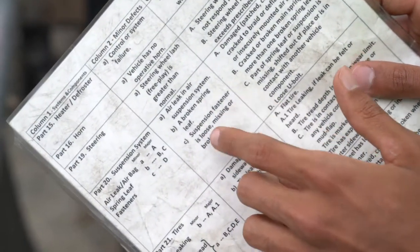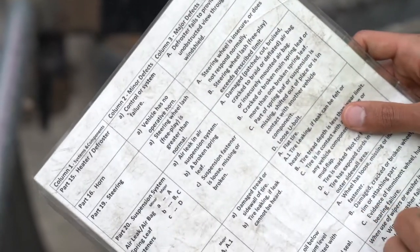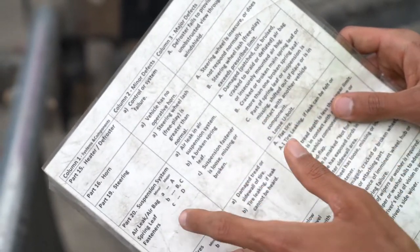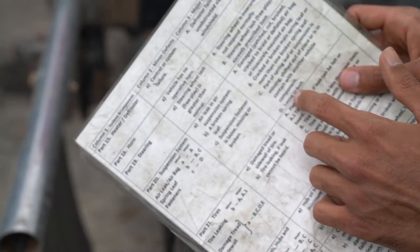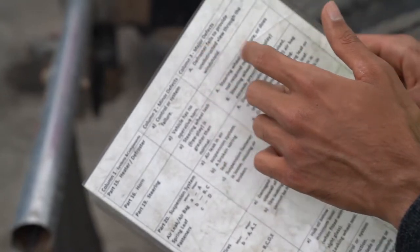Minor defect: mention logbook, call the operator, and I can still drive. So for the major side, it would be loose U-bolt, major defect, mention logbook, call the operator, and I cannot drive.